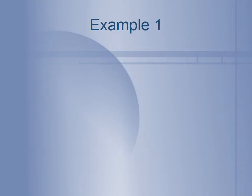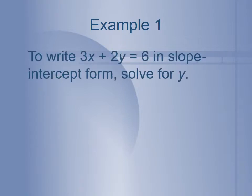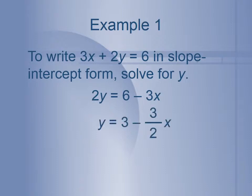So how do we do this? We start with the linear function 3x plus 2y equals 6 — this is in standard form — and we want to put it into slope-intercept form. We have to solve for y. The first thing we do is subtract 3x from both sides, then divide everything by 2. So 2y divided by 2 is y, and 6 divided by 2 is 3. 3x divided by 2 — we leave it as the fraction 3 over 2, so we have negative 3 over 2 x.